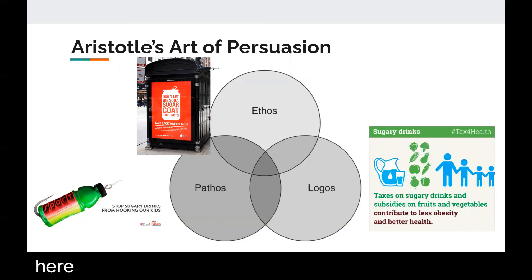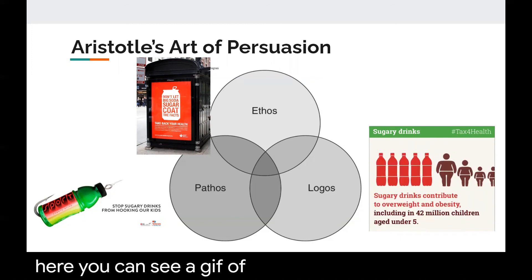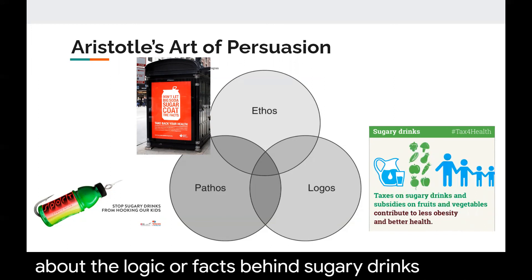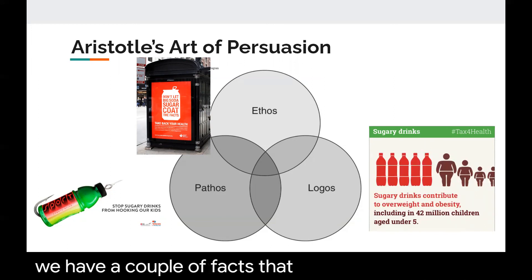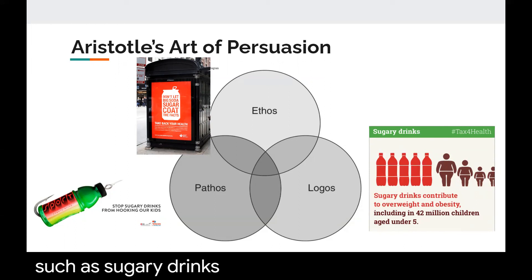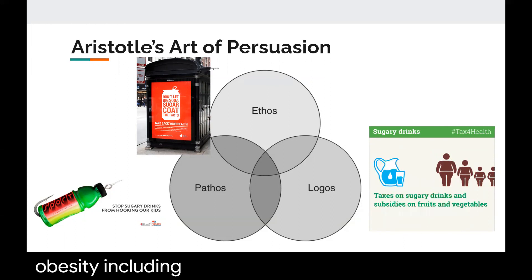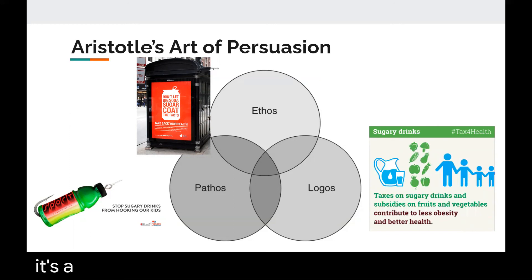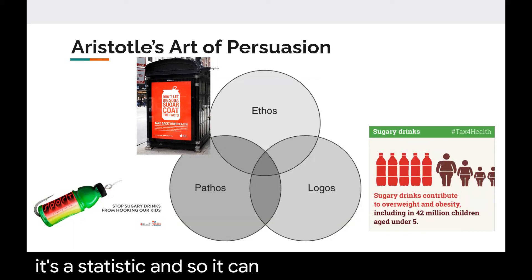On the right, you can see a GIF — a movable graphic — that talks about the logic or facts behind sugary drinks. We have facts that pop through, such as sugary drinks contribute to overweight and obesity, including 42 million children. So that's a fact, it's a statistic, and it contributes to the logic of the argument.